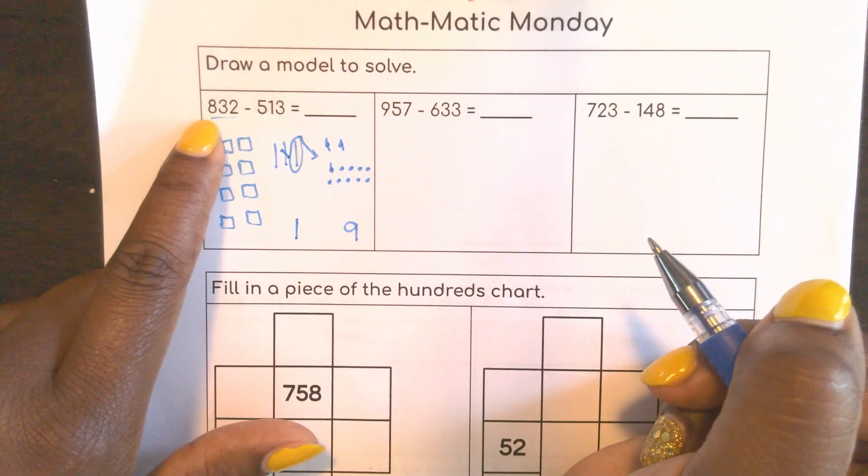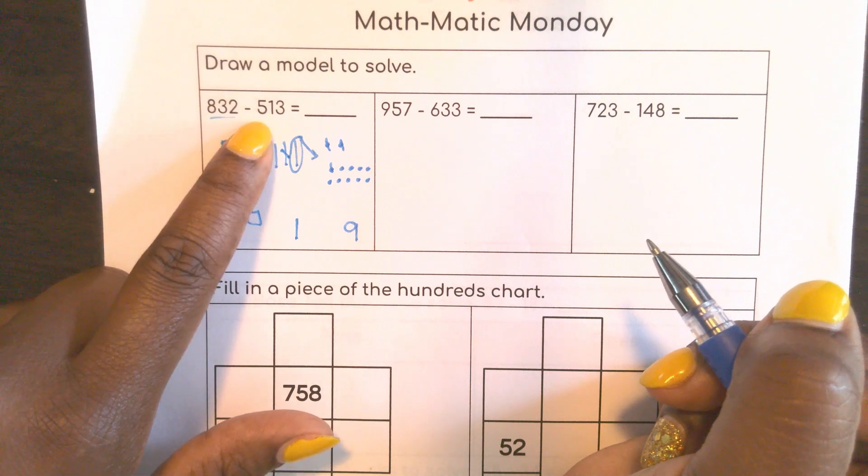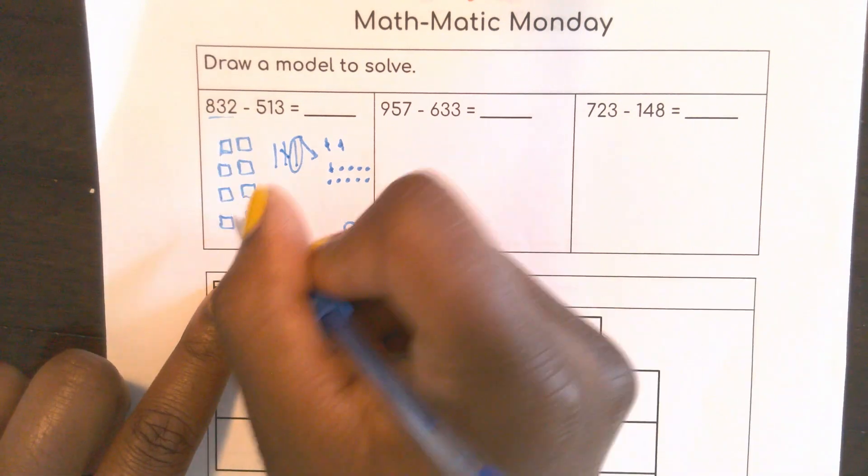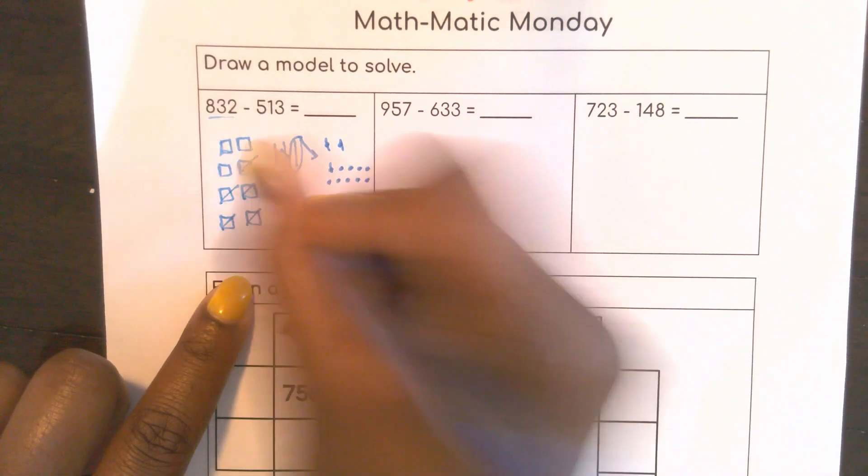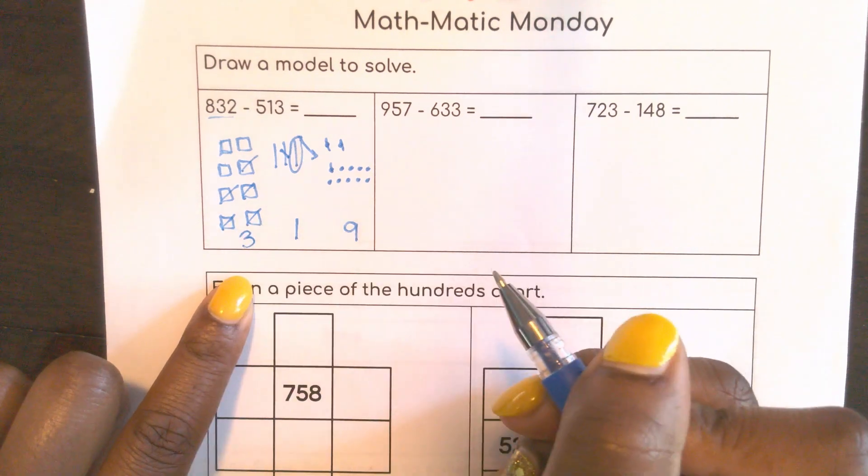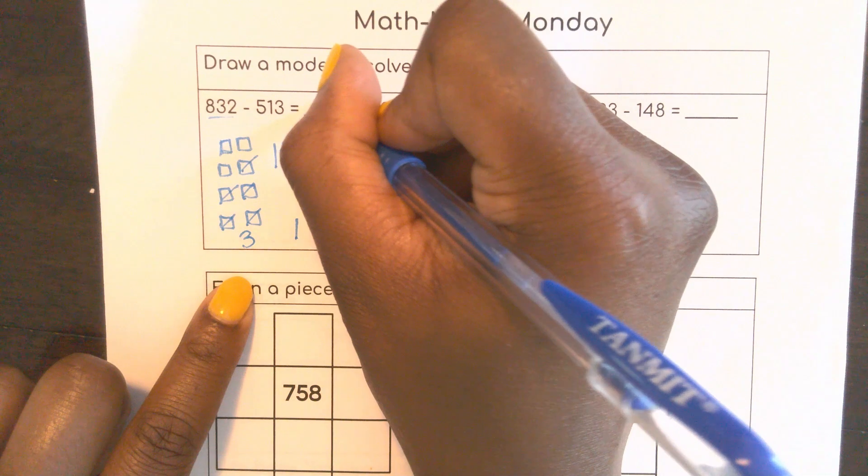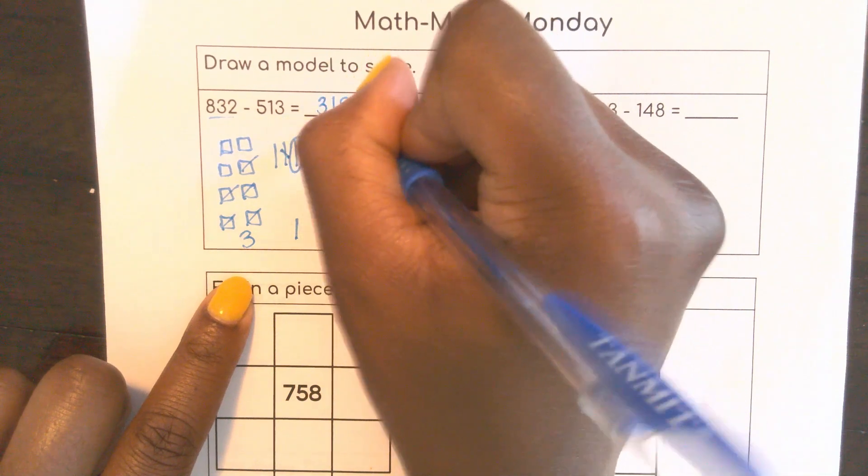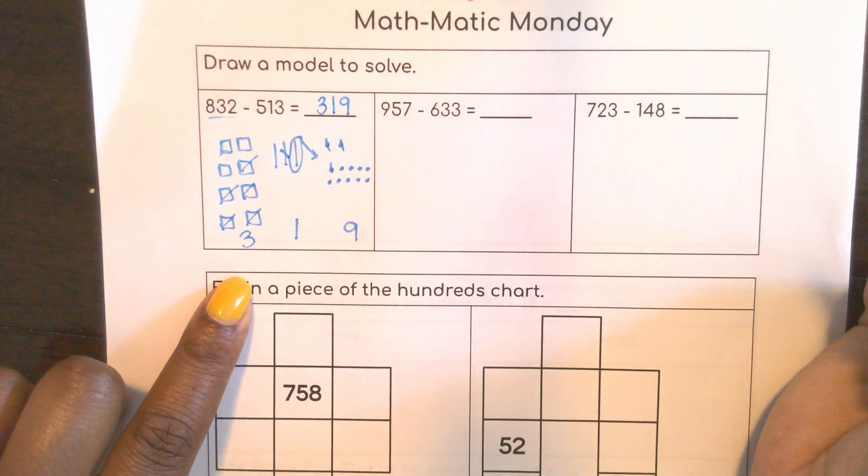And here I have 800 and I want to take away 500, so I'll take away one, two, three, four, five, so I have 300 left. So my number is 319. That's my answer there.